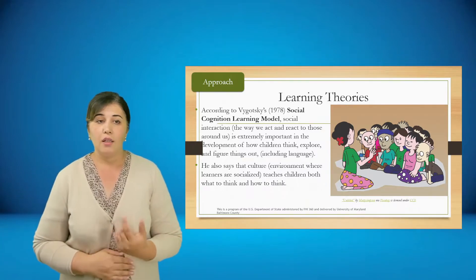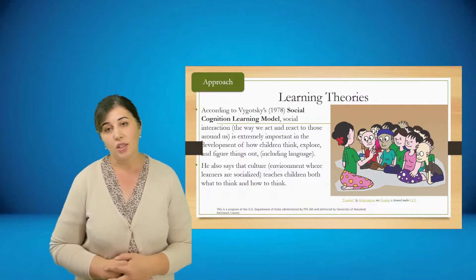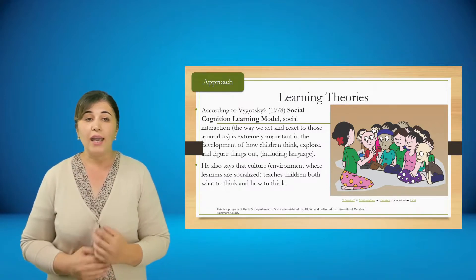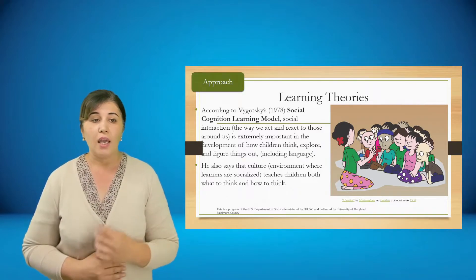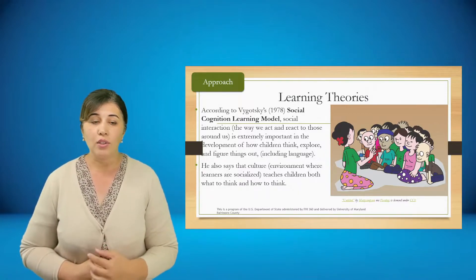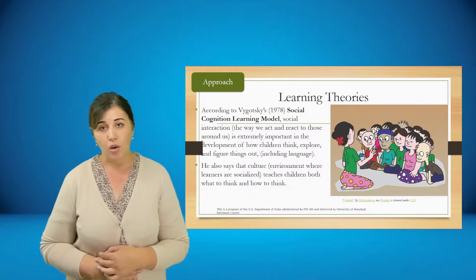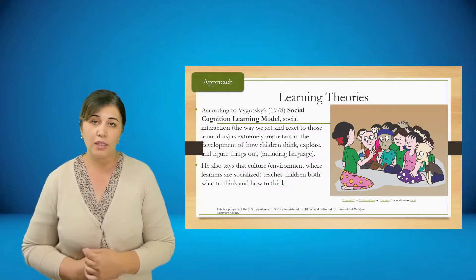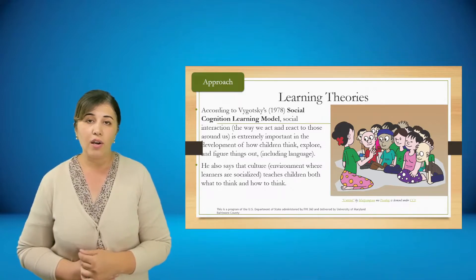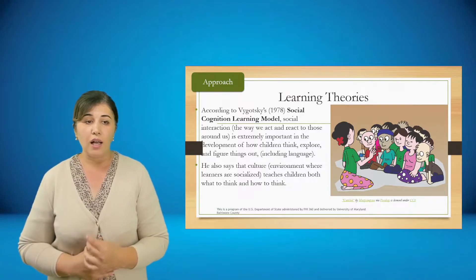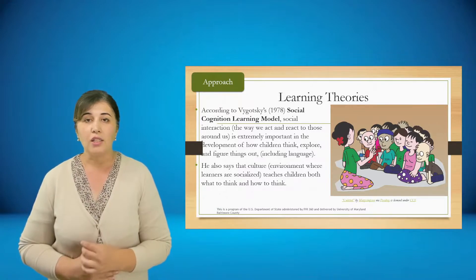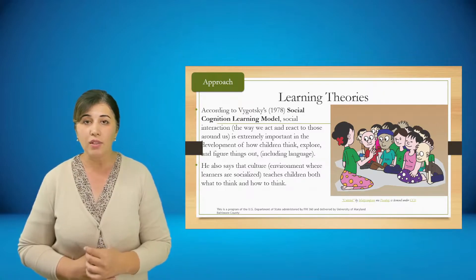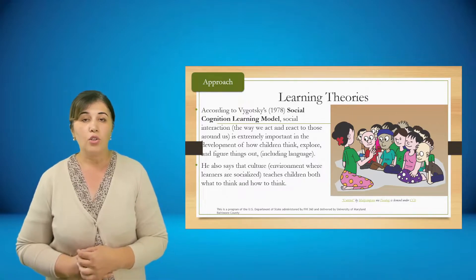According to Vygotsky, social cognition — the social interaction learning model — is also very important in language acquisition. Social interaction is where learners react to each other or we ourselves react with those around us. It is extremely important in the development of learners' thinking, exploring, and figuring things out, including language. He also says that besides social cognition, culture is another important factor in language acquisition — it is an environment where learners are socialized, teaching children both what to think and how to think. As language teachers, we should not only consider linguistic points of language, but also socio-cultural features.